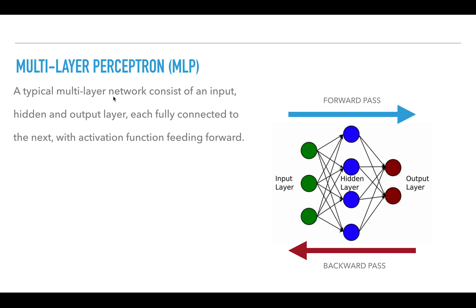A typical multi-layer network consists of an input, hidden, and output layer, each fully connected to the next with activation function feeding forward.